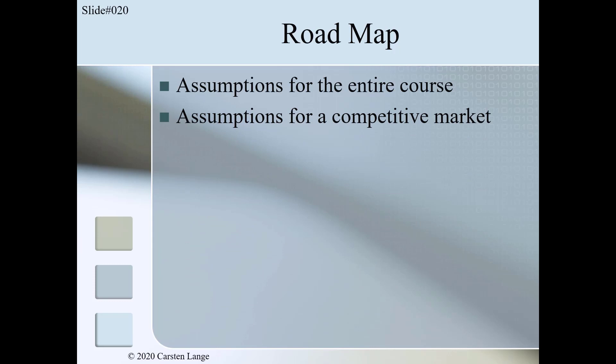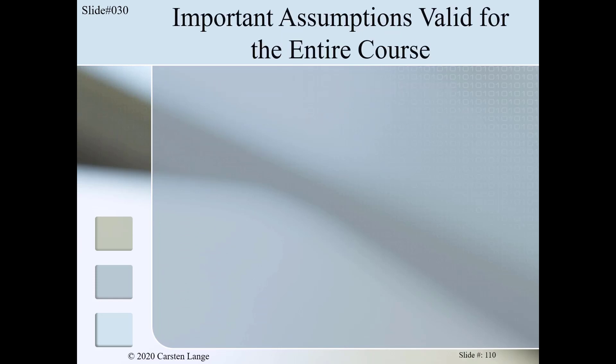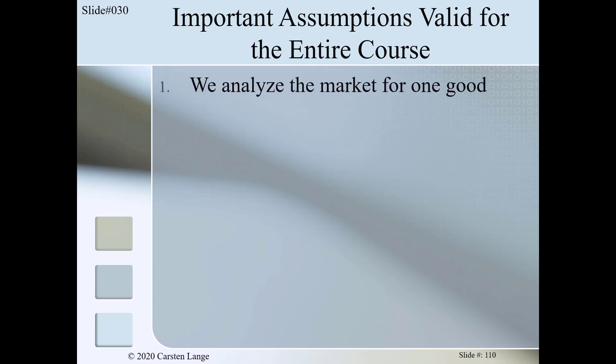Finally, in the third topic we will learn what the term price taker means. Let's first talk about assumptions which are valid for the entire course. The first assumption is that we analyze the market for one good. What we mean by the term 'one good' is not as unambitious as it sounds. For now, let's assume we analyze the market for high quality wheat, which is called Q-plus quality by the Washington Wheat Commission.